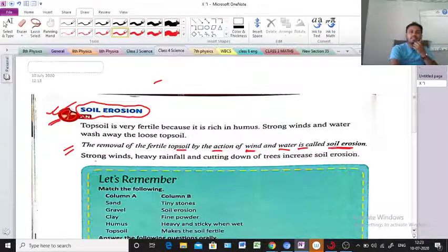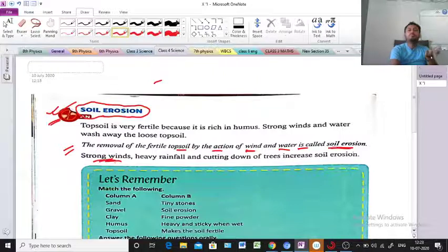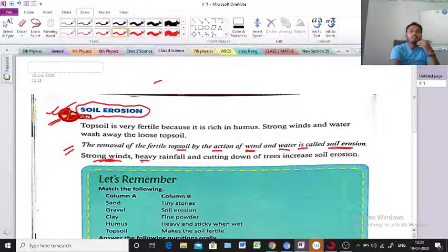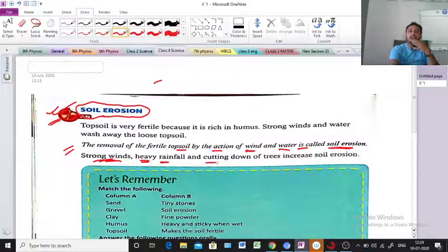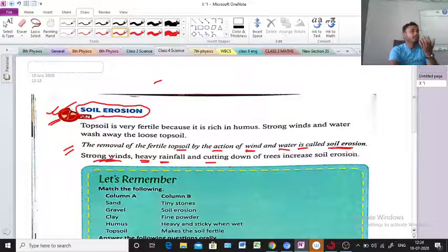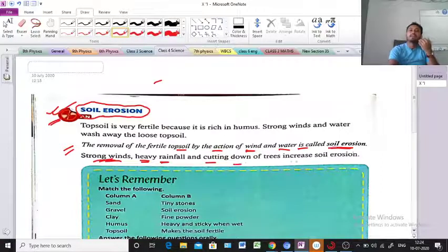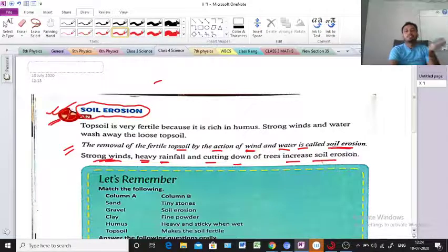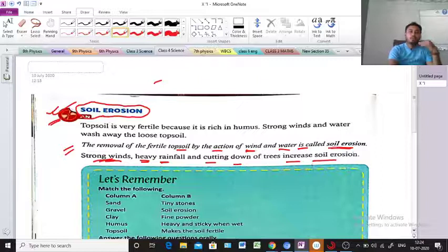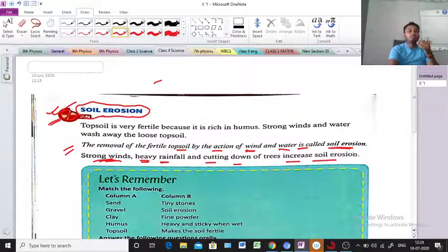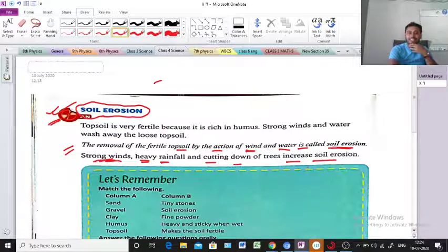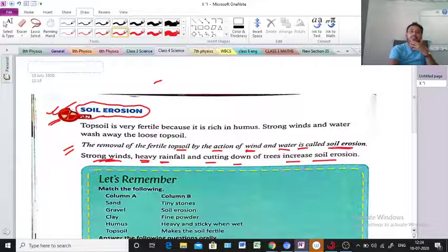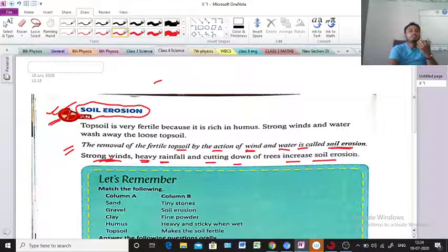What is the reason? Strong winds, strong wind flow, heavy rainfall, and cutting down of trees increase soil erosion. If there is strong wind flow or heavy rainfall, what happens? Dust flies away. Strong winds, heavy rainfall, and cutting down of trees increase soil erosion.